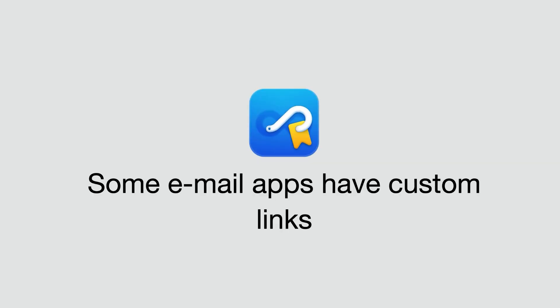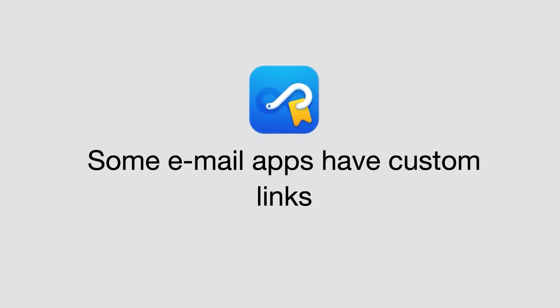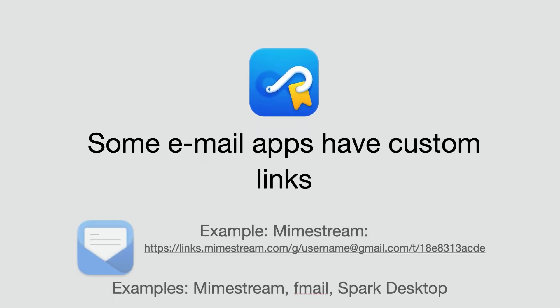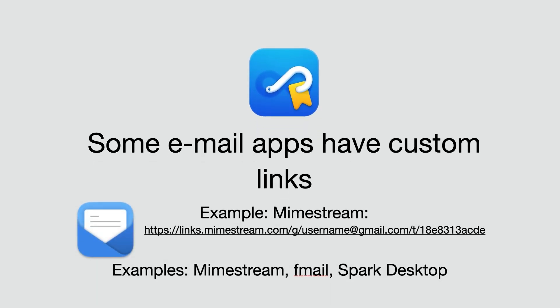Some apps do not use the Hook email scheme. Instead, they define their own schemes. They include MimeStream, Fmail, and Spark Desktop, and those links are not shareable.